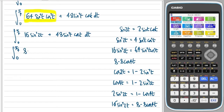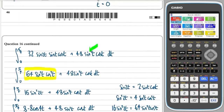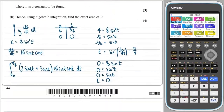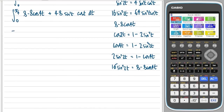So we have 8 − 8cos4t + 48sin²t·cost dt, and all of our working is clearly shown. Now we integrate: 8 integrates to 8t; minus 8cos4t integrates to minus 2sin4t (dividing by the derivative of 4t, which is 4). So we have 8t − 2sin4t so far.